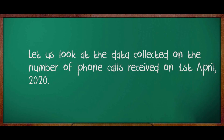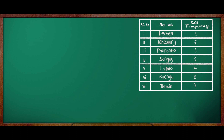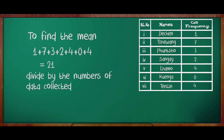Now, let's look at data collected on the number of phone calls received on 1st April 2020. Based on the data, we shall find the mean of that event data. The values or the numbers in a set of data are 1, 7, 3, 2, 4, 0, 4. To find the mean, we have to add all these numbers. The sum that we get is 21. After getting the sum, that sum should be divided by number of data. Since we have 7 as number of data, the sum 21 is divided by 7. Finally, the answer that we get is 3. So, 3 is the mean for this given data.